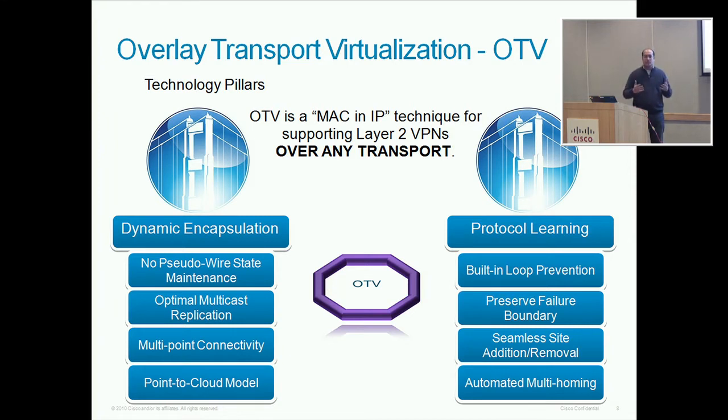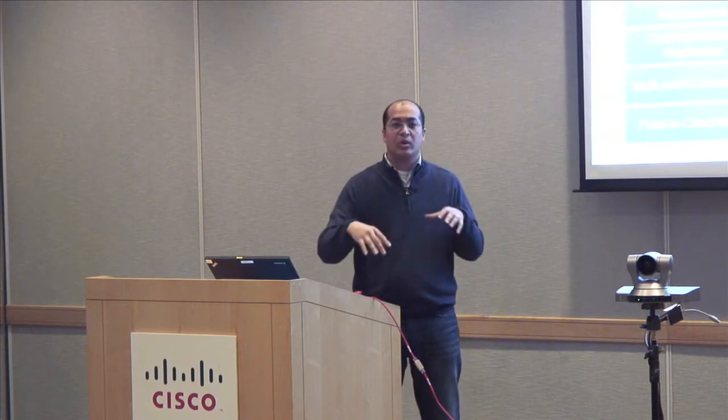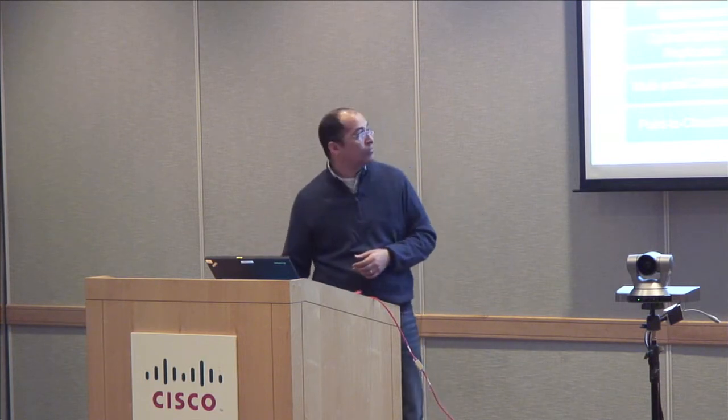Right out of the box, once you configure it with just a few configuration lines, you will have things built-in like multi-homing. When you have two ASRs sitting on the edge of your data center, they're going to figure out who's active and who's standby. They're going to do active-active and load balance the VLANs between them — without any extra configuration, unlike VPLS or other legacy technologies.